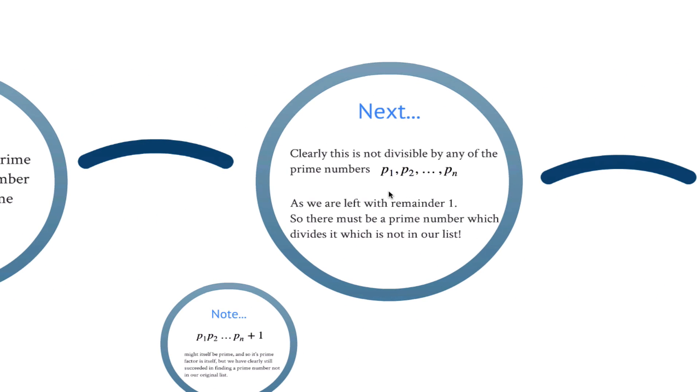Clearly, our new number is not divisible by any of the numbers p1 to pn because we'd be left with a remainder 1, so there must be a prime number which divides it which is not in our original list.